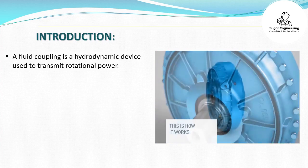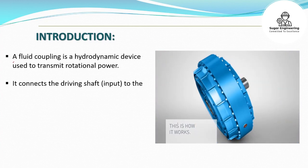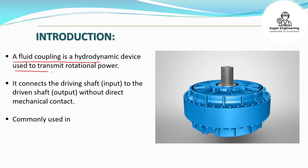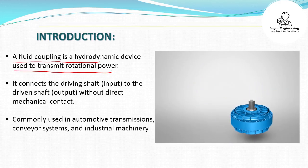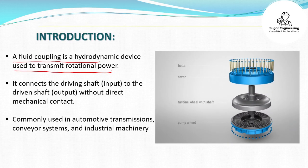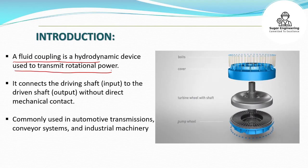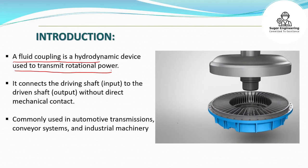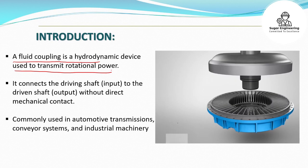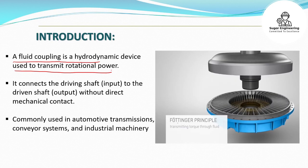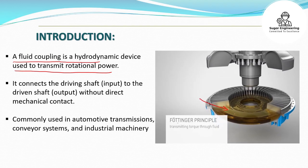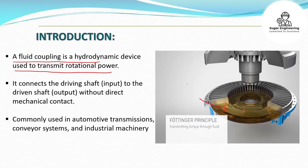Now we will discuss what is fluid coupling. A fluid coupling is a hydrodynamic device that is used to transmit the rotational power. A fluid coupling is also known as the hydraulic coupling and it is a device that is used to transmit the rotational power from one shaft to another using a hydraulic fluid. As you can see here, a hydraulic fluid is used to transmit the power from the input shaft to the output shaft.